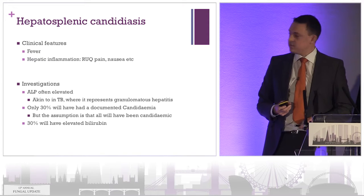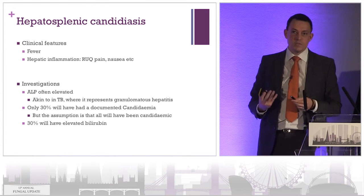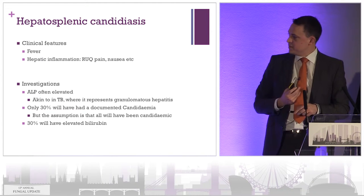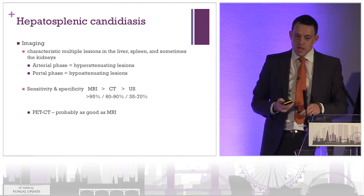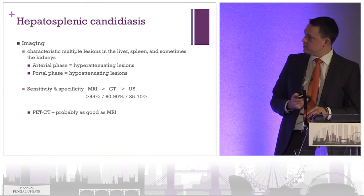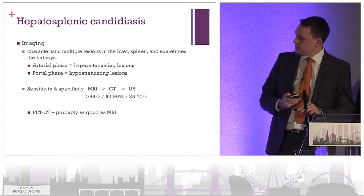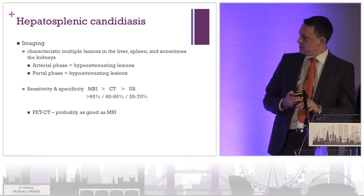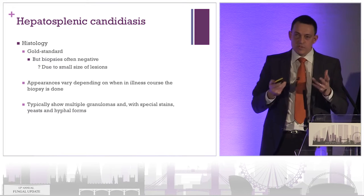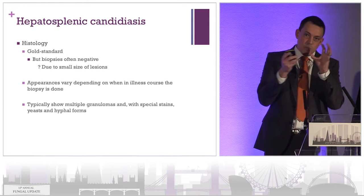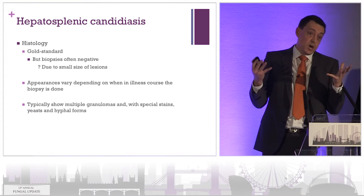The clinical features are often fever and hepatic inflammation. The interesting thing is why hepatosplenic — apart from Candida auris, a lot of candida live in our gut, so the idea is you have leakage with mucositis, a heavy burden of candida within your portal system, with deposition of candida within your liver and spleen. Investigations pointing you in the right direction: one is alkaline phosphatase, which is often raised, akin to seeing alkaline phosphatase in TB where it represents a granulomatous process within the liver. Only a third of patients will have a documented candidaemia, but the assumption is all will at some point have been candidaemic.